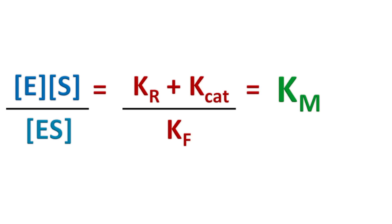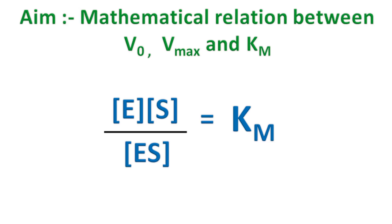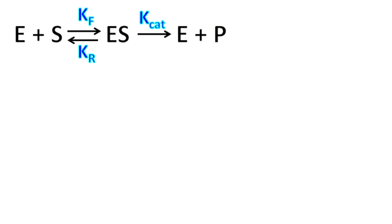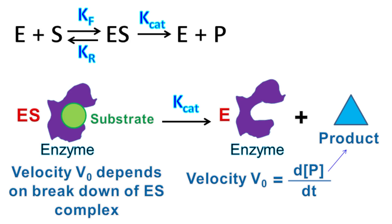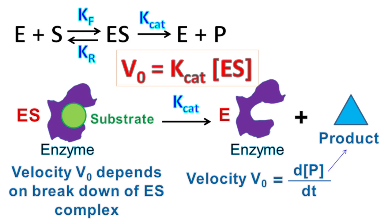Our aim is to establish a mathematical relation between V0, Vmax, and Km. We have the equation E·S / ES = Km. The velocity of the reaction is dp/dt, the rate of product formation per unit time. Product formation depends on the dissociation of the ES complex, so velocity can be expressed as V0 = Kcat·ES. Total enzyme concentration is E0 = E + ES, where some enzyme molecules are free and others are bound with substrate.